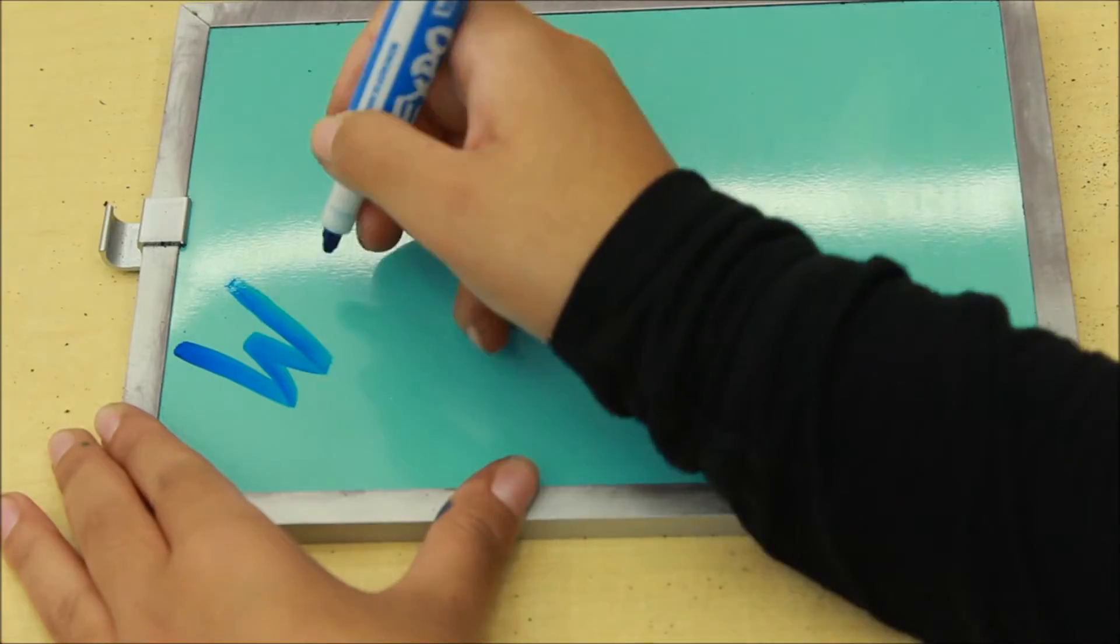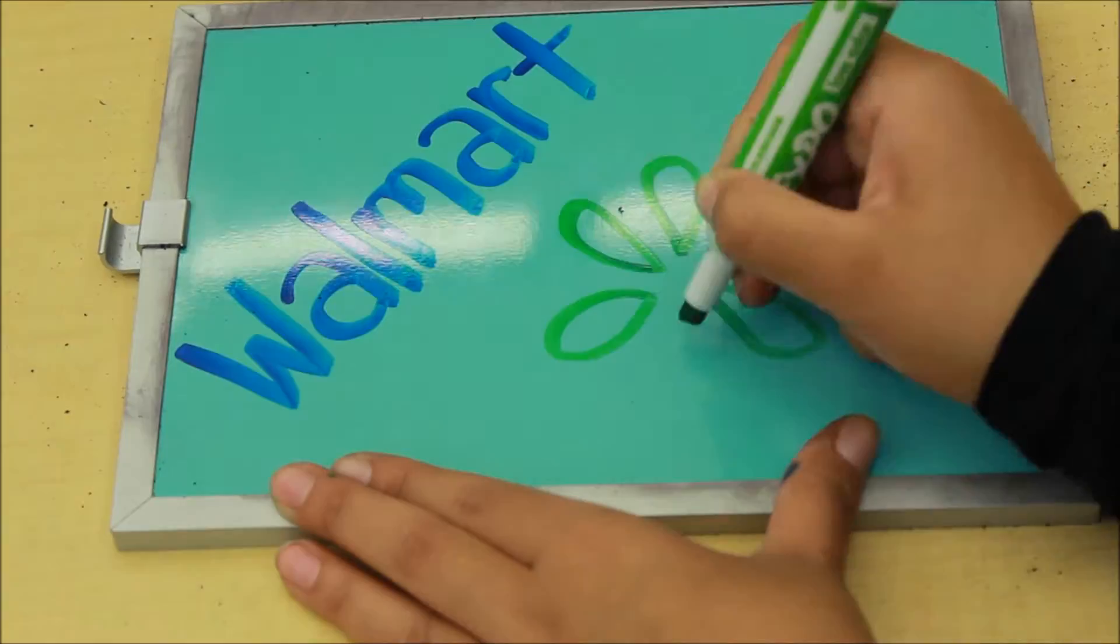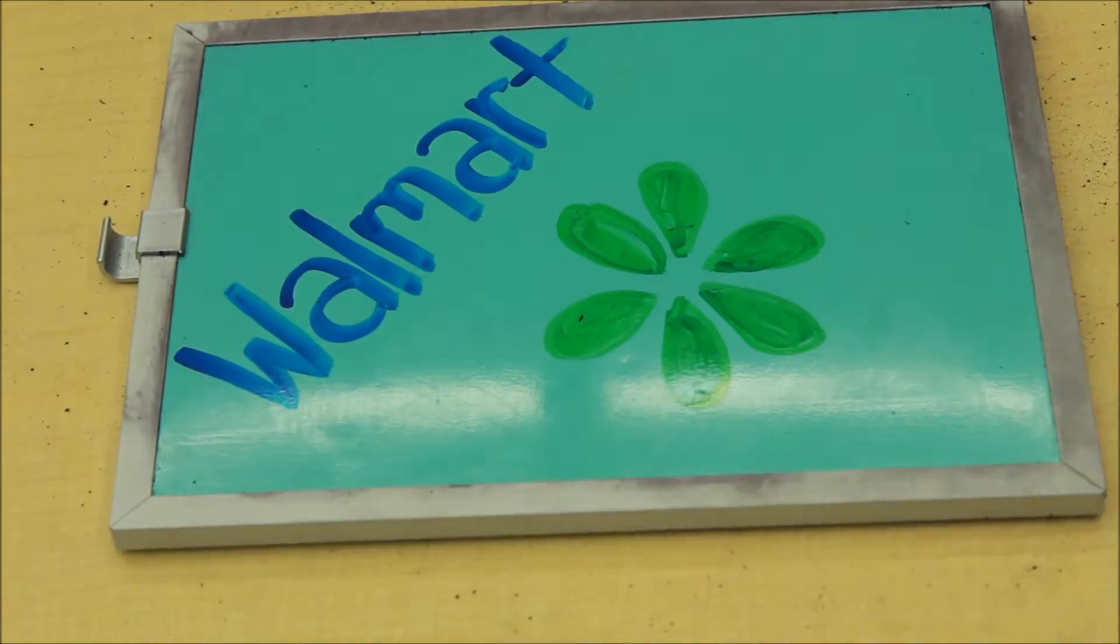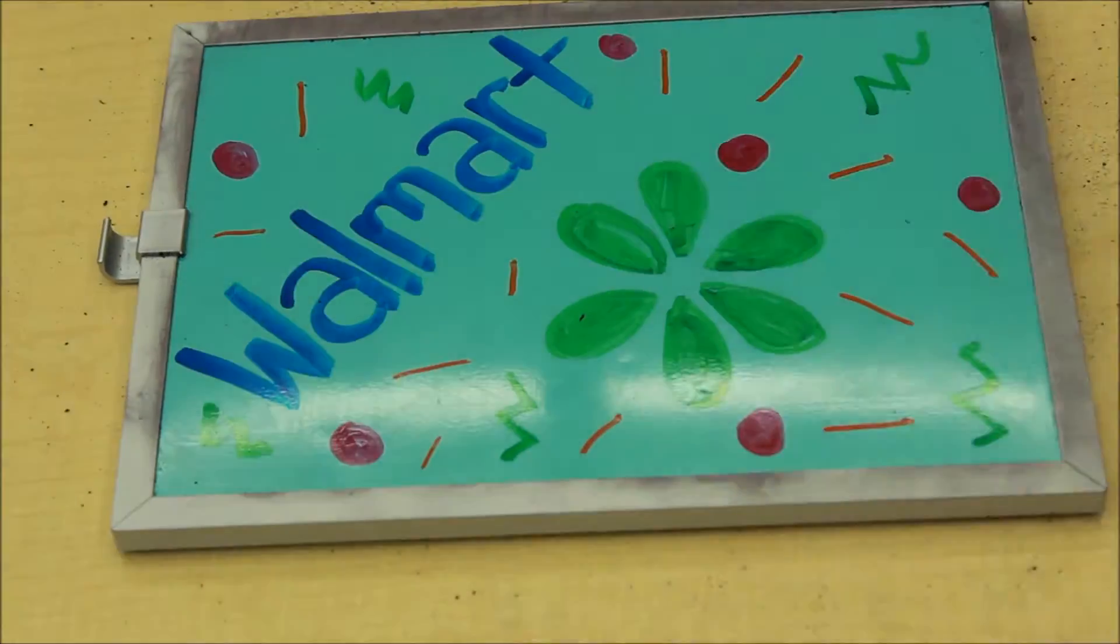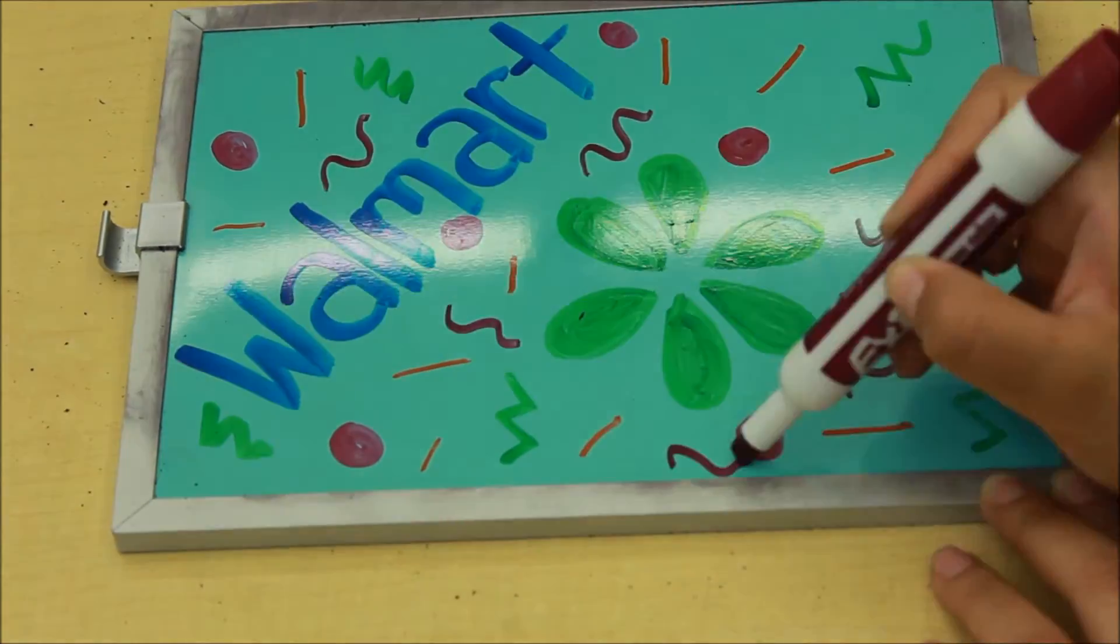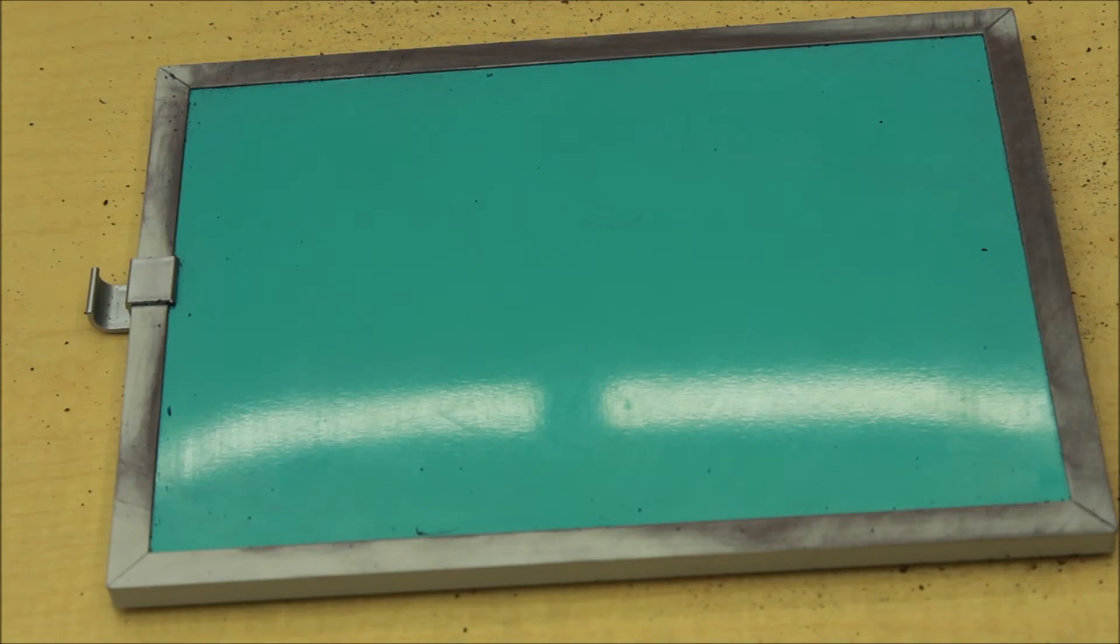When you finally multiply all these numbers together, the return on equity favored Walmart with a number of 0.20 while Target came in with a negative 0.117. So after analyzing all of these ratios, Walmart seems to be in favor.